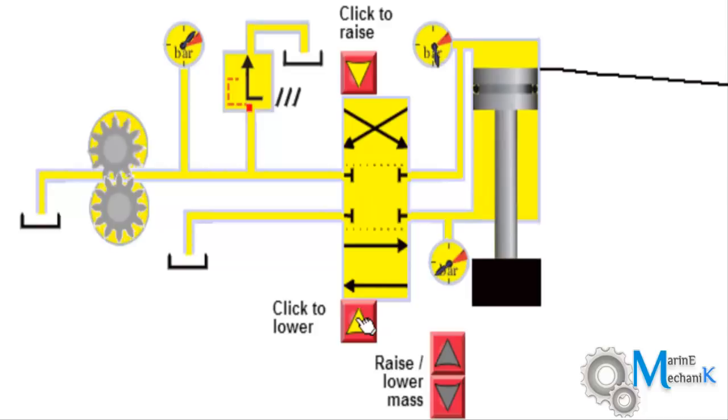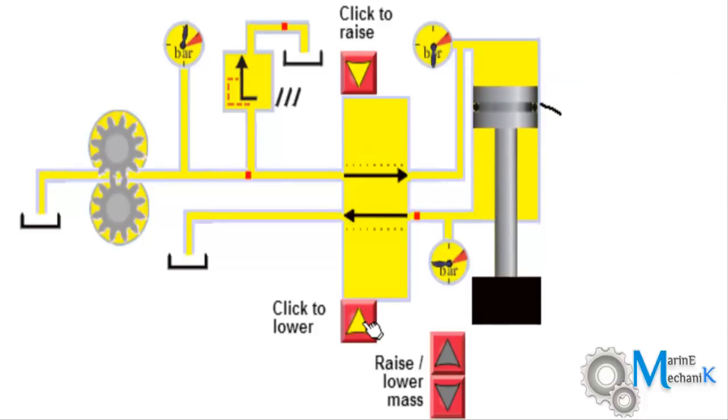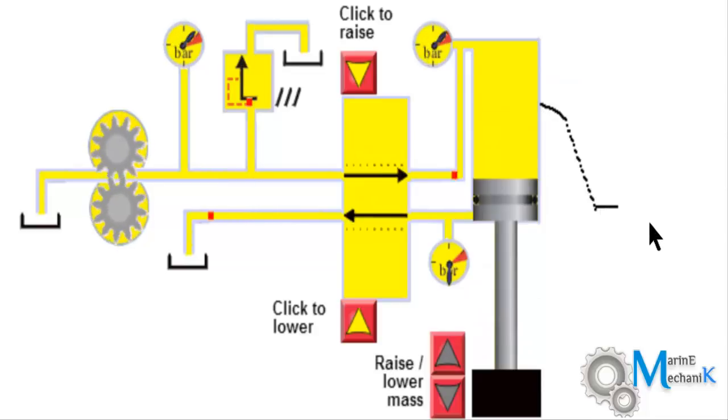So let's lower it now. Now you can see since the load is high it will lower very faster. The drop is much faster because the load on the system is too high. So even by gravity it can easily come down.